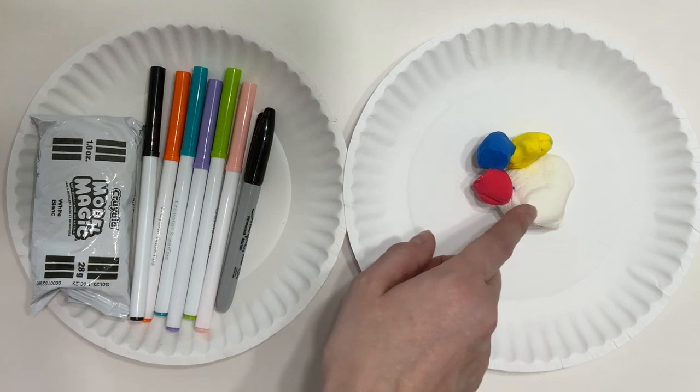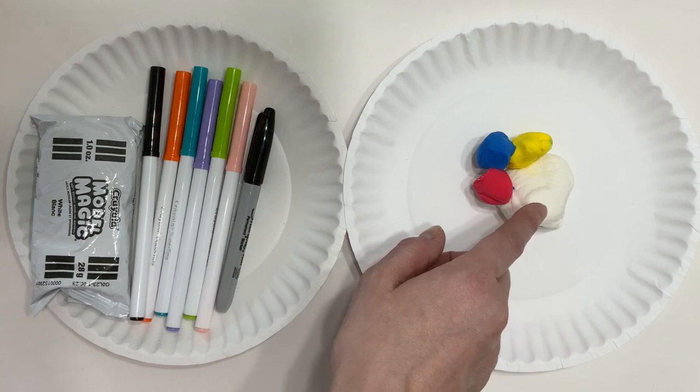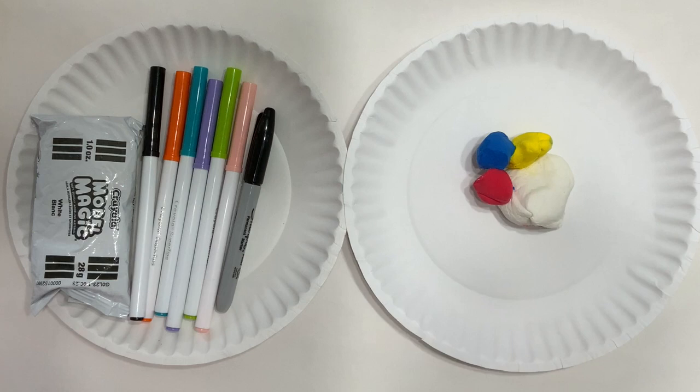You'll also want a scrap sheet of paper or paper plate to work on. This way, the Model Magic doesn't stick to your table. The paper plate and scrap paper are also perfect to let your Model Magic dry out on after you're finished with your creations.